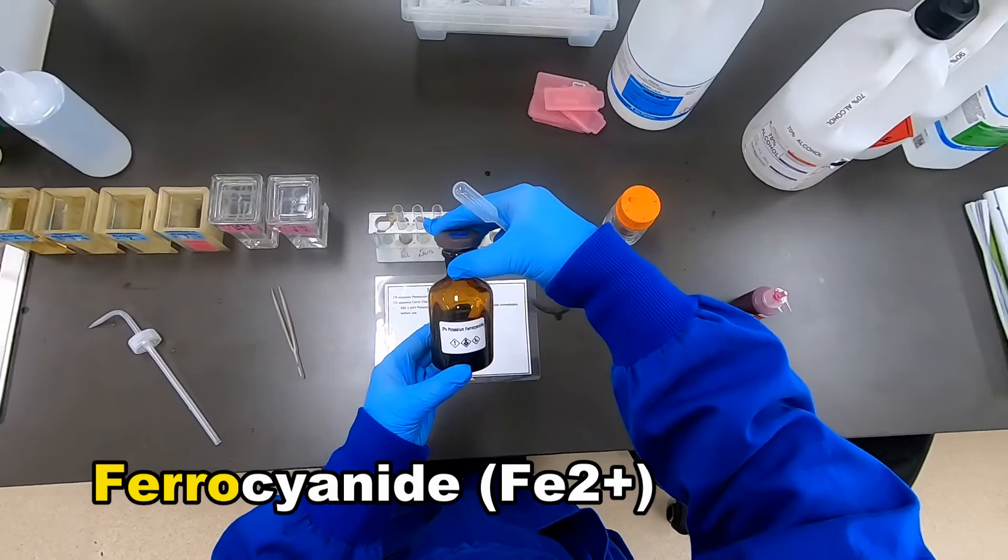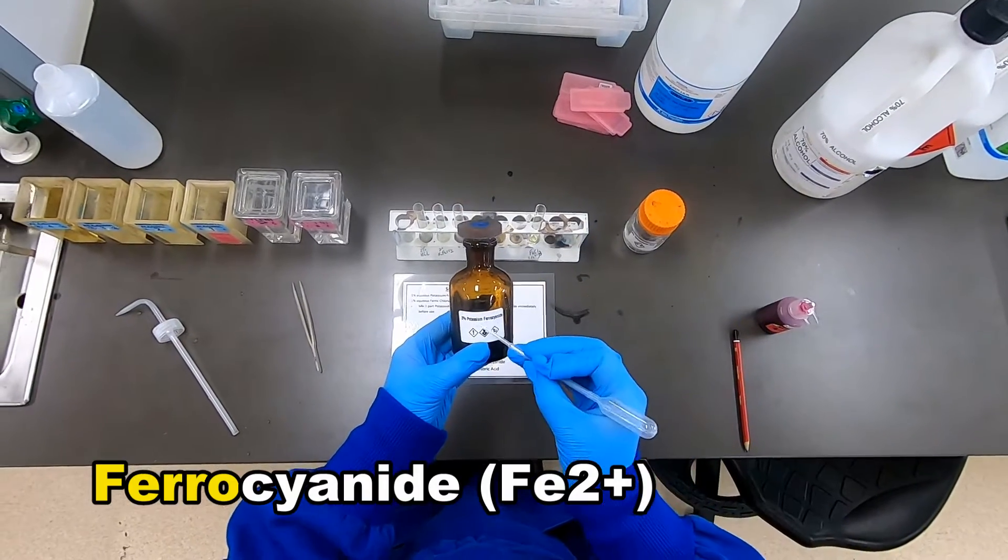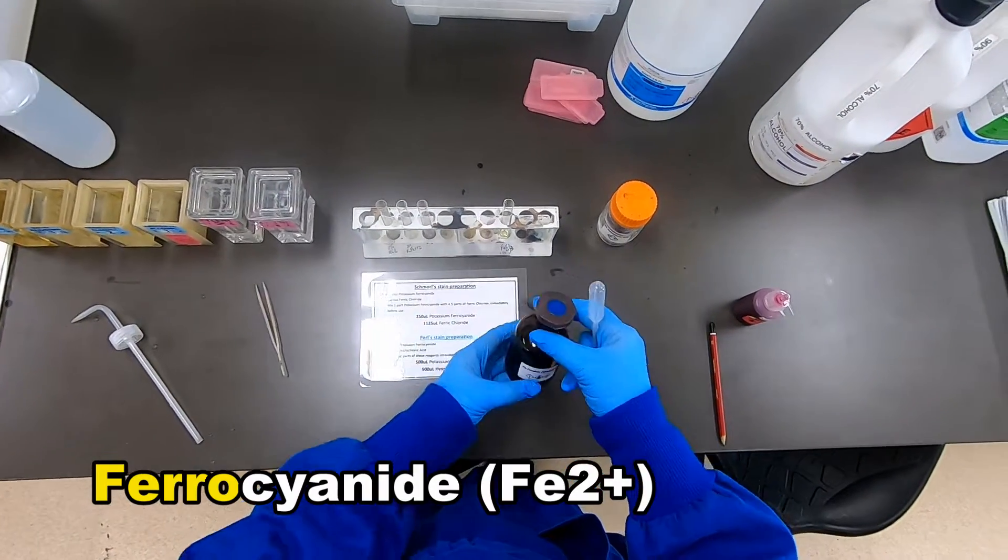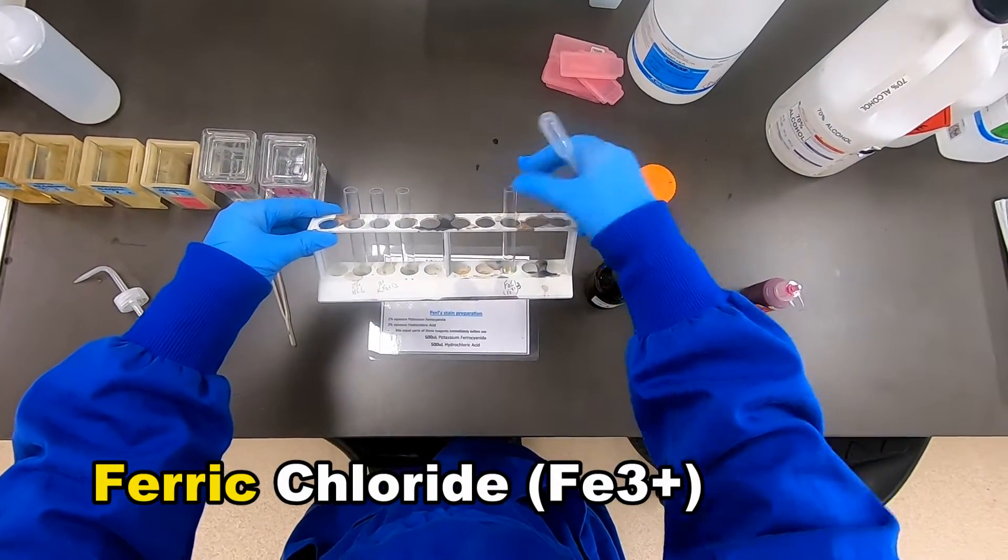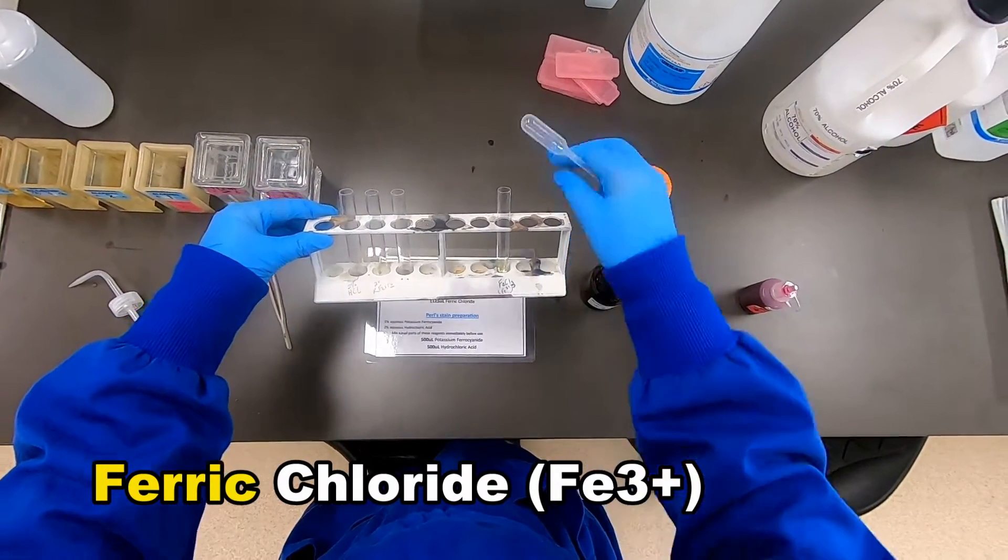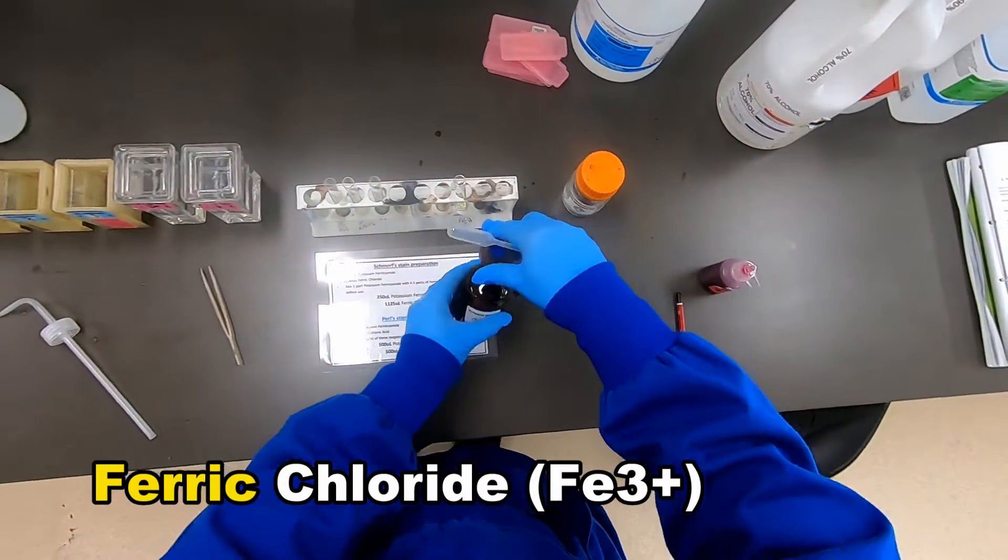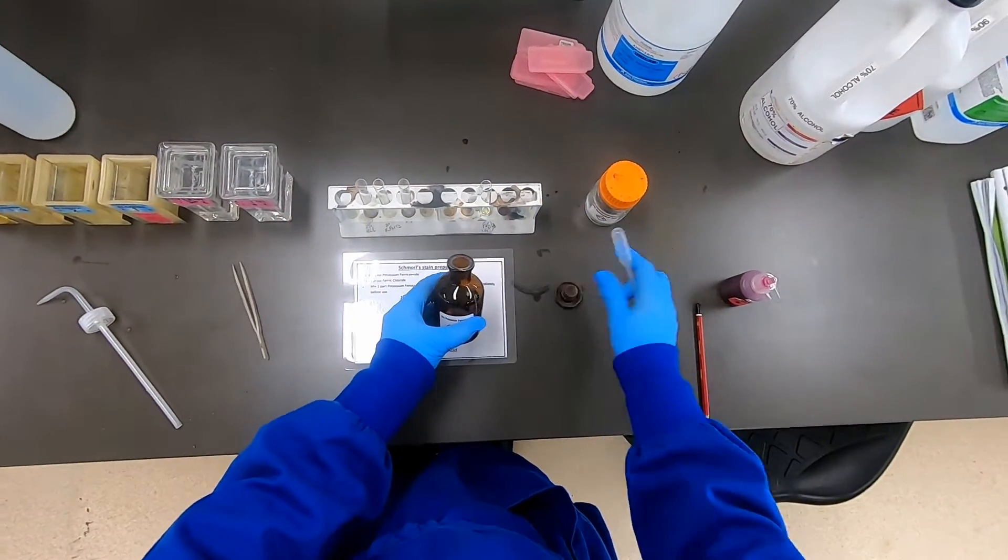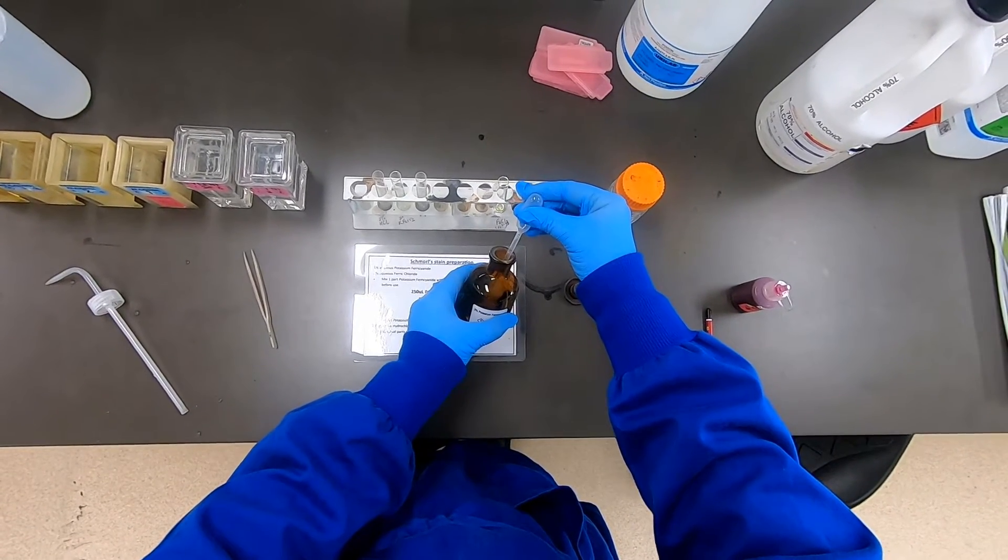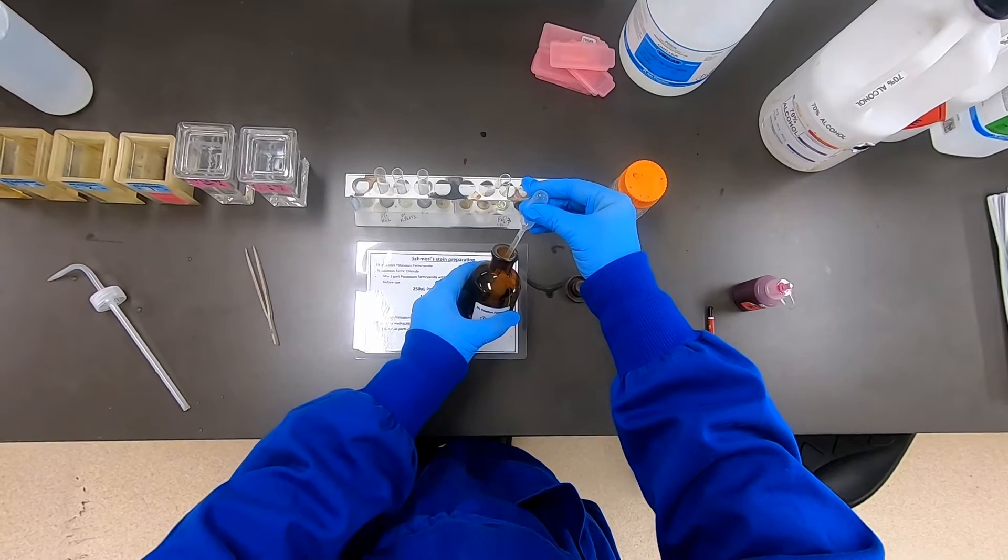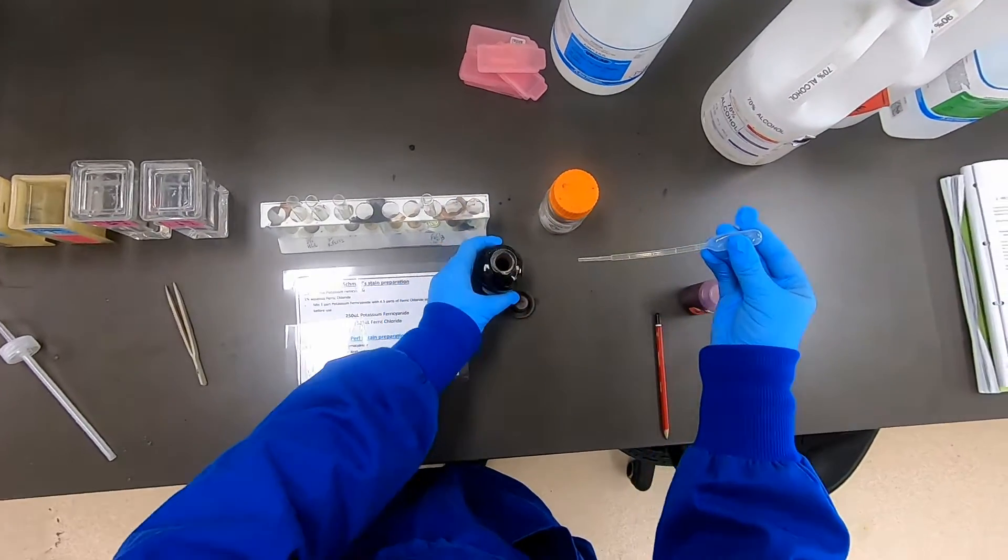Once those slides are staining, we can do a demonstration using test tubes as to what's actually going on here. If we take a solution of ferric ions in solution—of course these would naturally come from the tissue—and we apply potassium ferrocyanide.